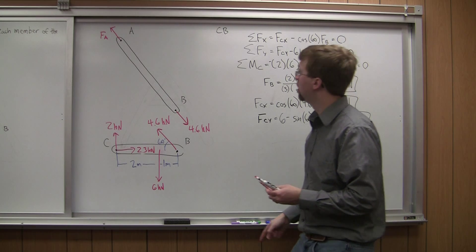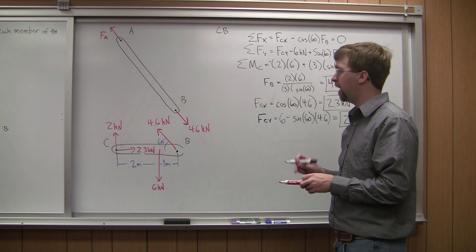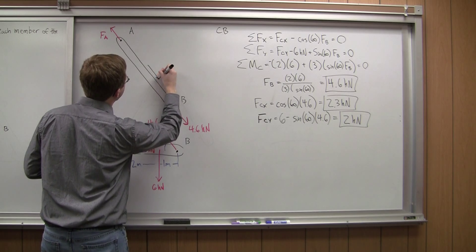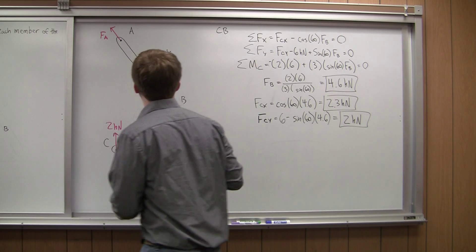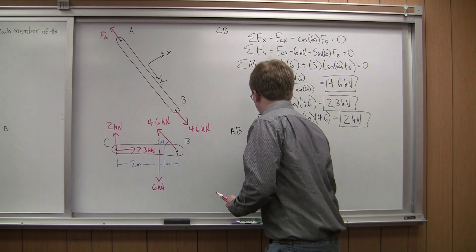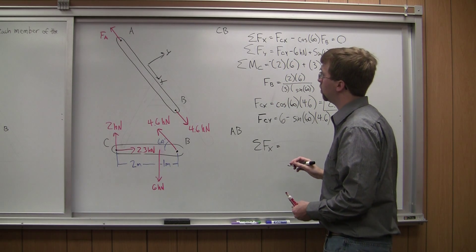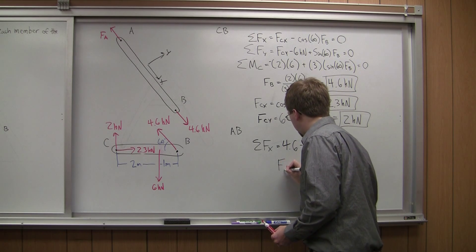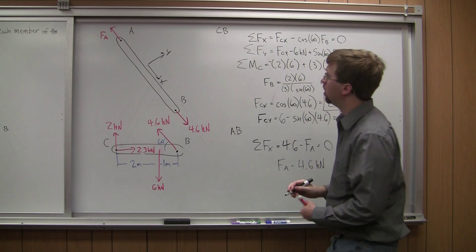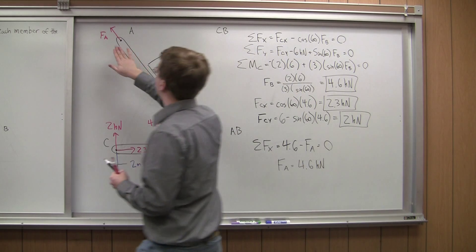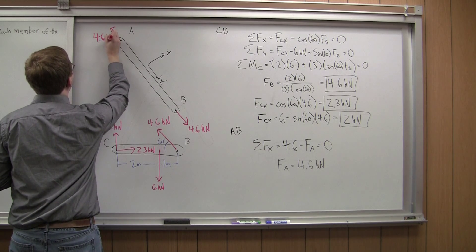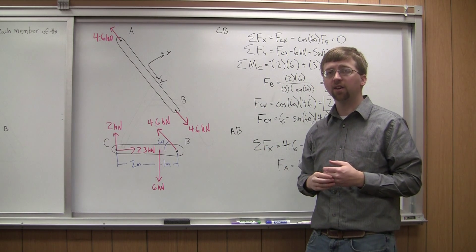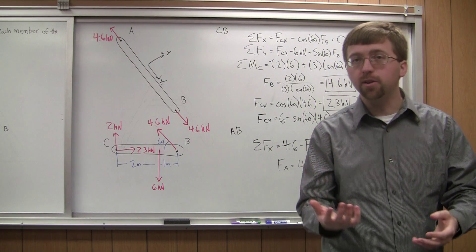And so the last part of solving this problem, the only thing I don't know is this FA up at the top. If I look at sum of forces in the X, sum of forces in the Y, I really could just kind of rearrange this and define my axes differently. So X and Y, like so. And for member AB, sum of forces in the X is going to be equal to 4.6 minus FA is equal to 0. And I get FA is equal to 4.6 kilonewtons. Which is kind of obvious with the two-force member. I'm going to have an equal and opposite force on the other end of my two-force member. So with that, I've got my two members. I've solved for all the forces acting on each of those two members. And we've kind of solved our problem. So thank you for watching and I hope to see you again.